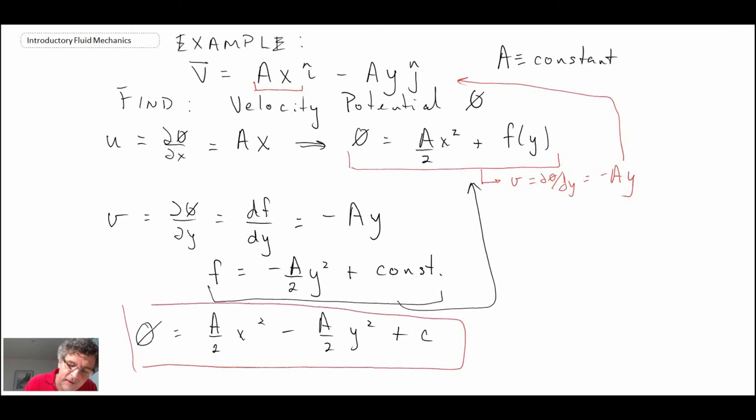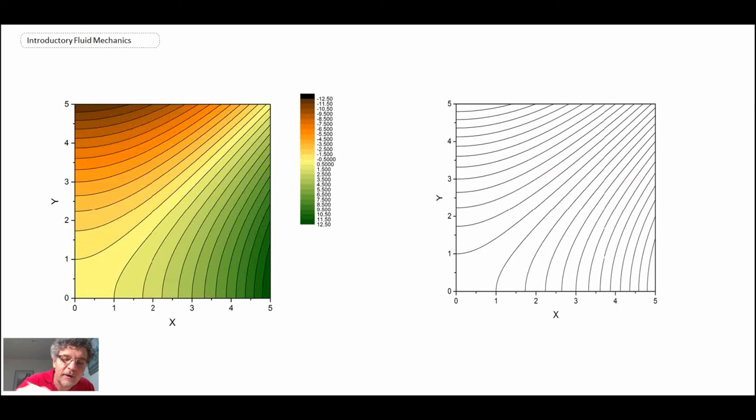What I'm going to do now is show you contour plots that have been generated with A equals 1 and the constant equal to 0. So the velocity potential function, when you do that, looks something like this. This is for phi equals, actually it would be 1 over 2, because I've substituted 1 for A, so we have 1 over 2x squared minus 1 over 2y squared.